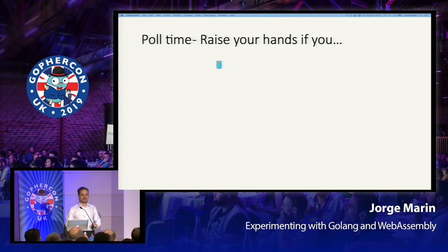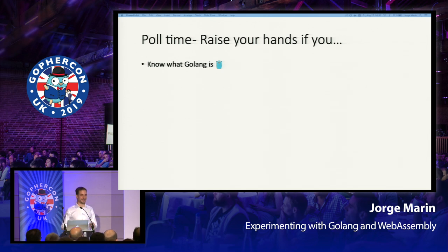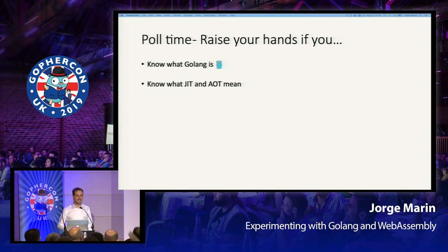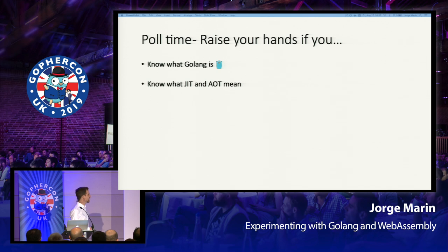Poll time, like every good talk. Raise your hands if you know what GoLang is. So I'm in the right conference. Know what JIT or AOT means? JIT stands for just-in-time, and AOT stands for ahead-of-time, and this refers to the compilation of code. You're going to see later how this relates to WebAssembly and GoLang.